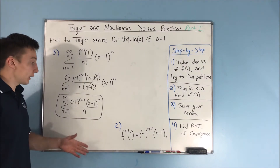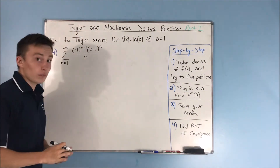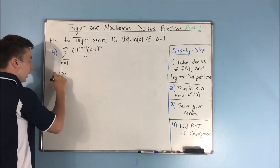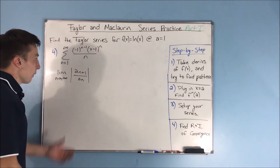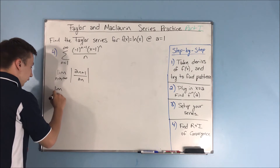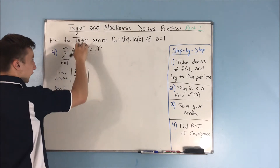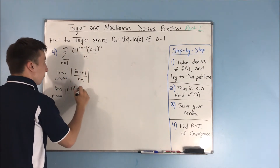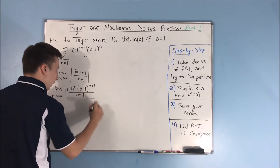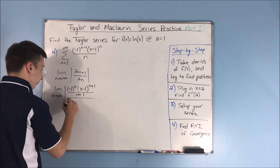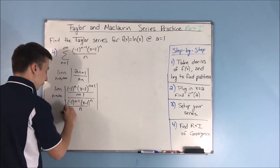Now we want to find the radius and interval of convergence using the ratio test. The ratio test is the limit as n approaches infinity of the absolute value of a sub n plus 1 over a sub n. We plug in a sub n plus 1 — raising all the n's by 1 — to get negative 1 to the n times x minus 1 to the n plus 1 over n plus 1, all over our a sub n, which is negative 1 to the n minus 1 times x minus 1 to the n over n.